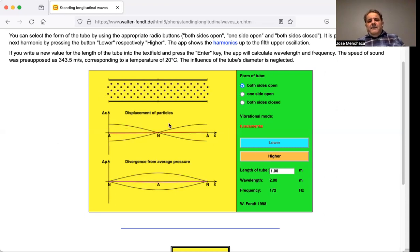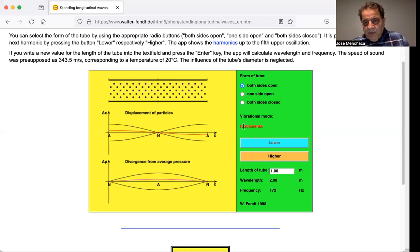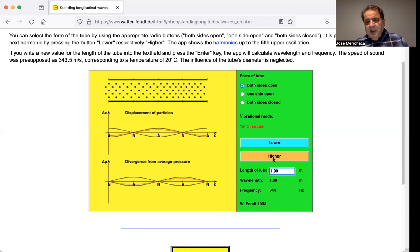And we can see, so if you have a tube like an organ that's open at both ends, this is the type of resonance you will get for the fundamental. Now you can see it says here vibrational mode is the fundamental. Now he calls what we call the second harmonic, he calls it the first overtone. But to us, as we studied it, it's the second harmonic.